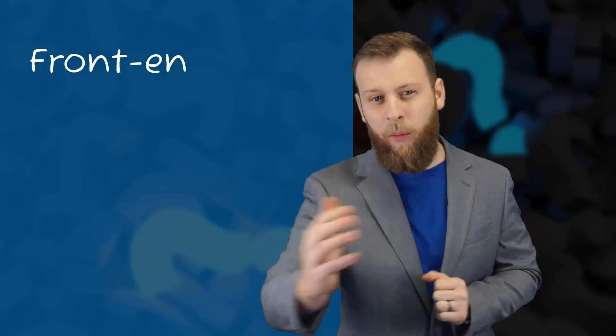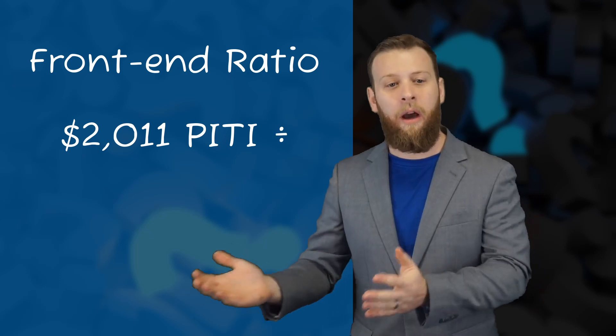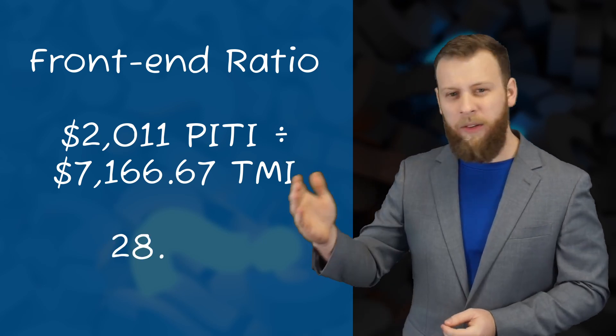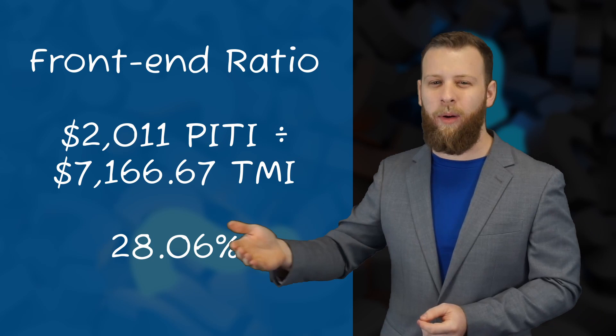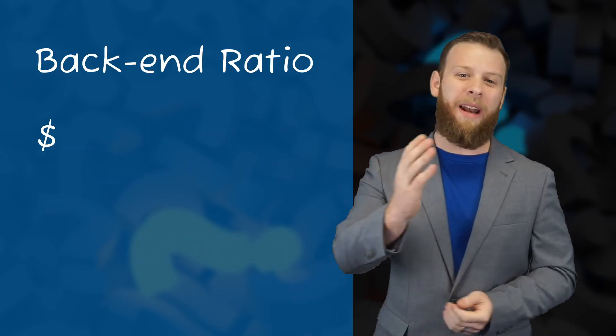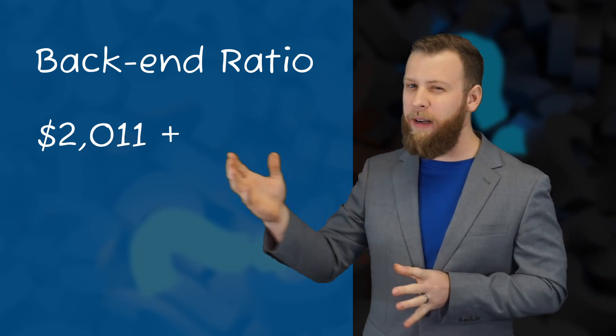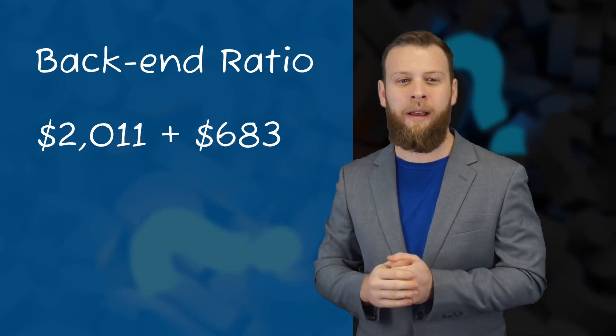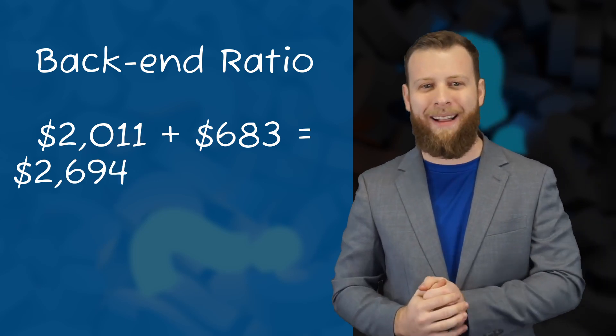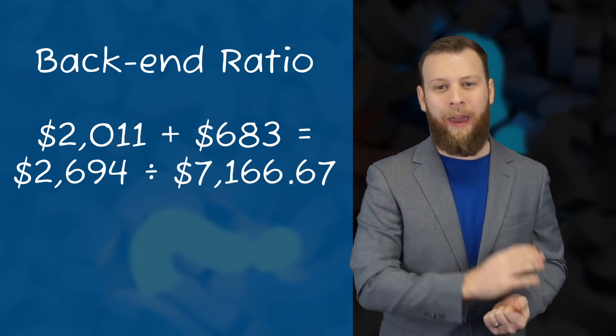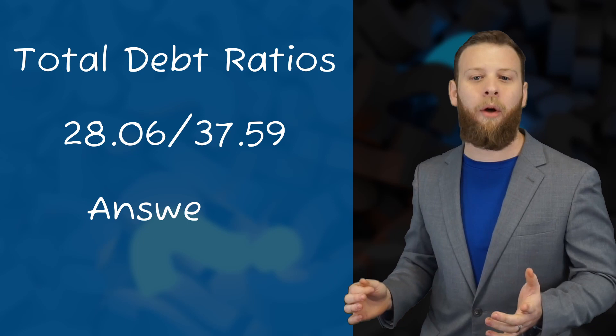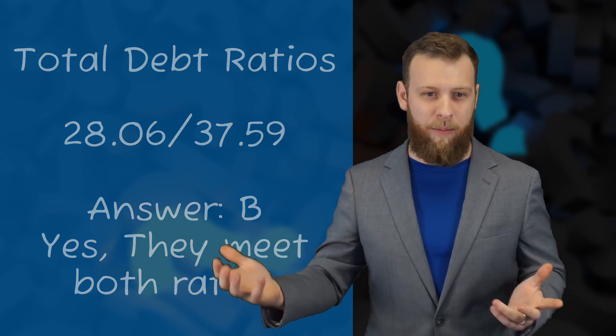Now for the front end ratio, we're going to take that proposed housing payment of $2,011 and we're going to divide it by their total monthly income of $7,166.67. So that's going to put our front end ratio at 28.06%. For the back end ratio, we're going to add that proposed housing payment to the total debts of $583 for the car payment and $100 for 5% of that $2,000 credit card balance. It's going to put their total debt at $2,694. When we divide that by that monthly income, that's going to give us a back end ratio of 37.59%. With their total debt ratios at 28.06 and 37.59, they are going to meet both ratios for that FHA loan. So the correct answer is going to be B, they meet both ratios.